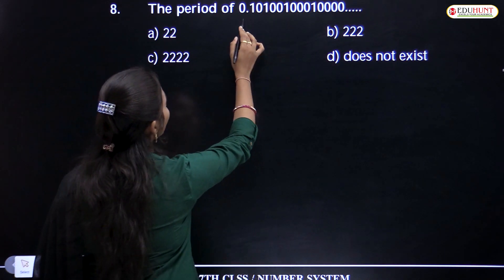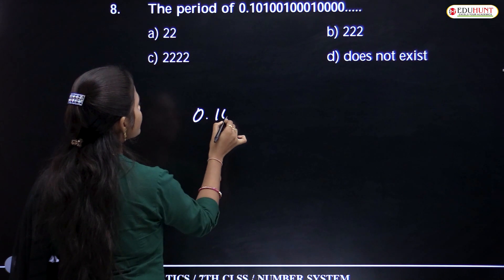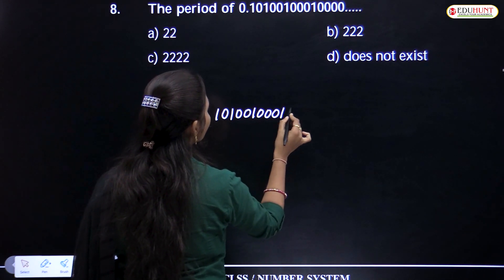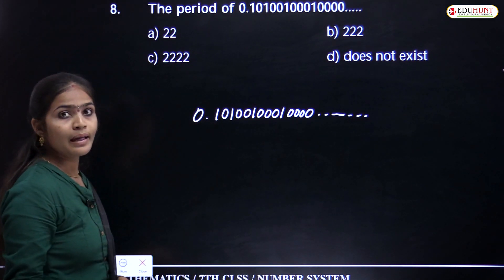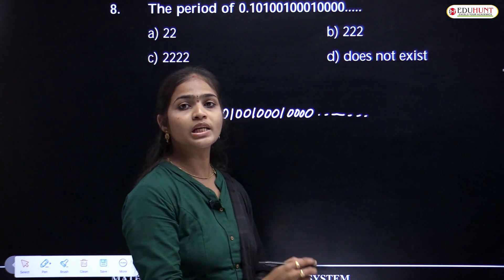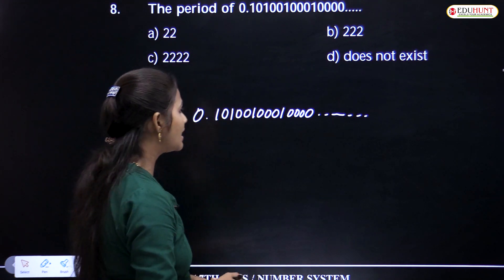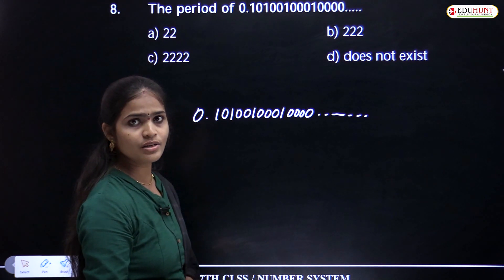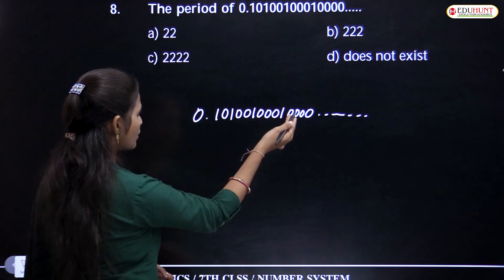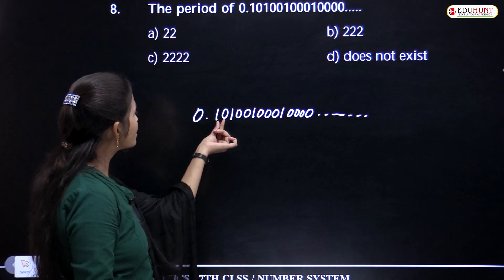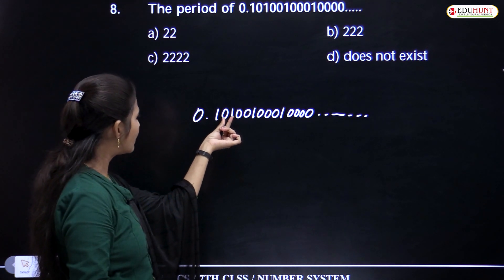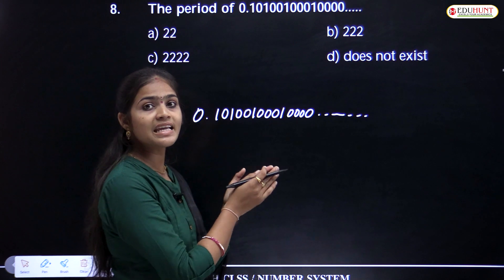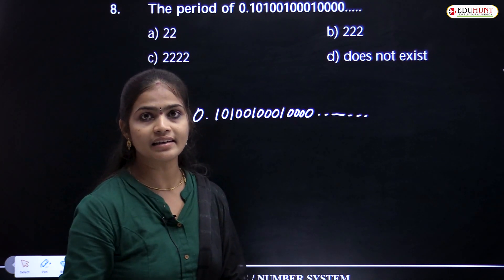The period of the decimal 0.1001000100001... In the decimal part, which number is in repetition? You might think 0 is repeating, but after every group of zeros there is a 1. After 1 digit there is a 1, then 2 zeros and 1, then 3 zeros and 1, then 4 zeros and 1. The same digit must repeat without any other digit in between for it to be a period.